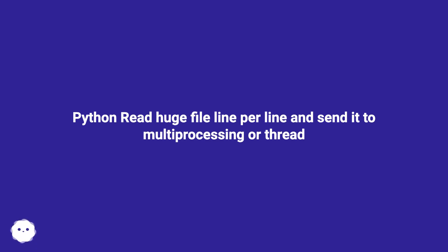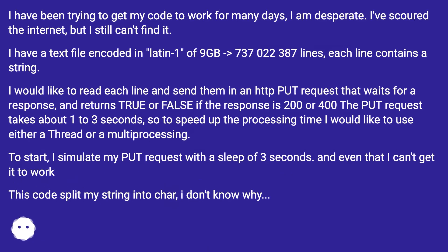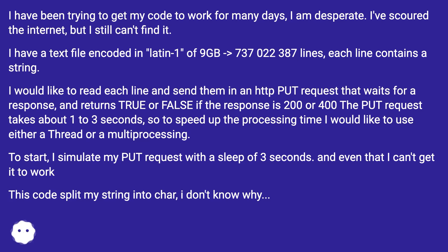Python: read huge file line per line and send it to multi-processing or thread. I have a text file encoded in Latin-1, 9GB, 737 million 22,387 lines. Each line contains a string. I would like to read each line and send them in an HTTP PUT request that waits for a response and returns true or false if the response is 200 or 400.